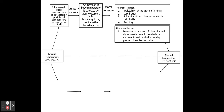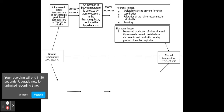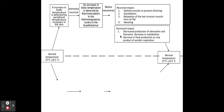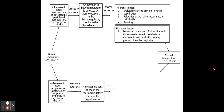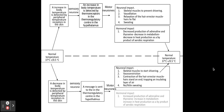The hormonal impact is that we get a decrease in the production of adrenaline and thyroxine, because these two hormones cause an increase in metabolism. So in order to cool down, we decrease the production of these two hormones. Together, these physiological responses reduce our body temperature. Similarly, a decrease in body temperature would be detected by the same receptors and involve the thermoregulatory centre, but with a slightly different response using many of those same terms.